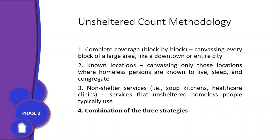Regarding the unsheltered count methodology, based on HUD-approved methodology, we use a combination of complete coverage, known location, and non-sheltered services. We cover our entire county with the exception of the portion covered by the Everglades. We do known locations — speaking with outreach teams and law enforcement officers who give us point locations. We also send volunteers to areas we haven't mapped to make sure we've covered the whole county. We also target non-sheltered services: soup kitchens, church services, healthcare clinics that cater to the homeless, and parks.